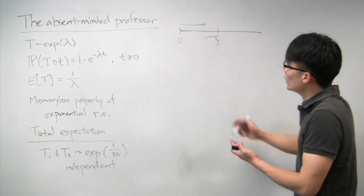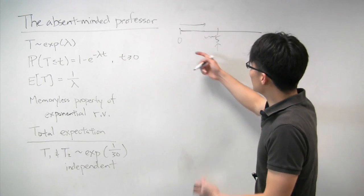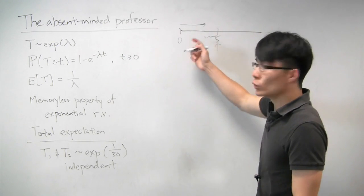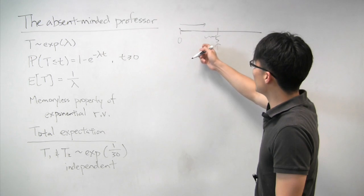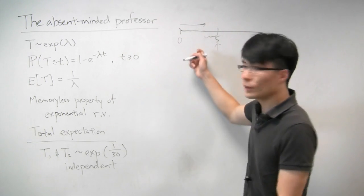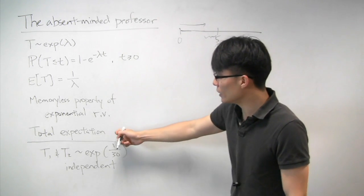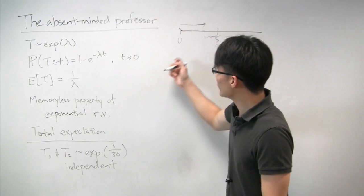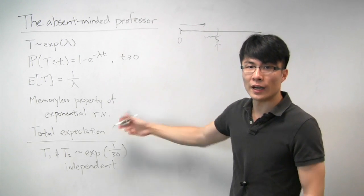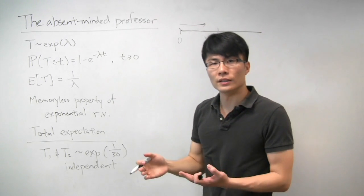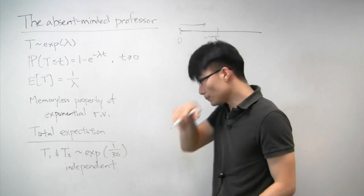So we have two scenarios, and we can split them up, calculate expectations for each one, and then use total expectation to find the overall expected length of time.